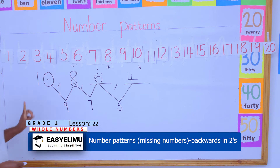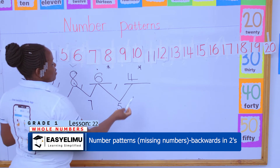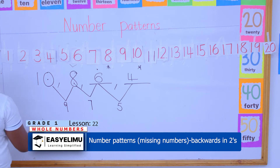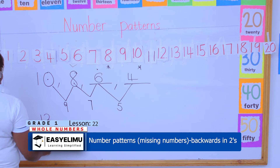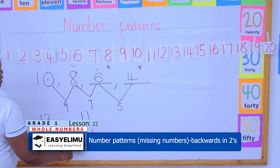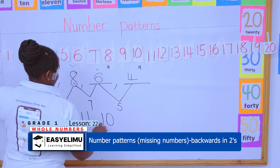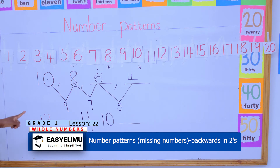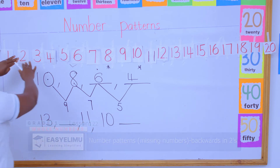Remember our rule: you must have a four, you must have a six, you must have an eight, you must have a ten. But sometimes they can give you a number that does not follow the even rule. For example, they write: 13, dash, 11, 10, dash — and they're telling you to fill in the missing numbers. You might ask yourself, now what will happen? Just go back to your numbers.